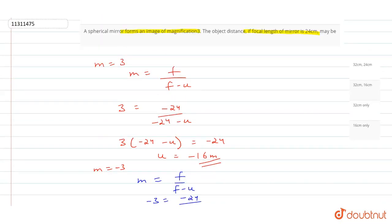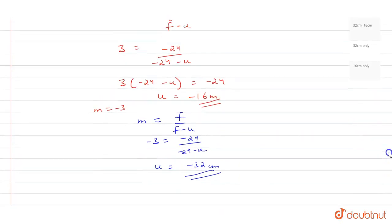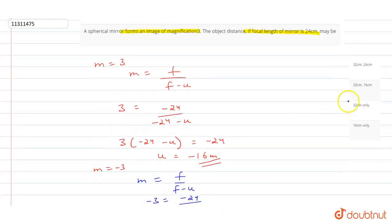So for positive magnification, u is minus 16. And for negative magnification, u is minus 32. So minus 32, minus 16. So 32 and 16, this is the correct answer. The second option is the correct answer.